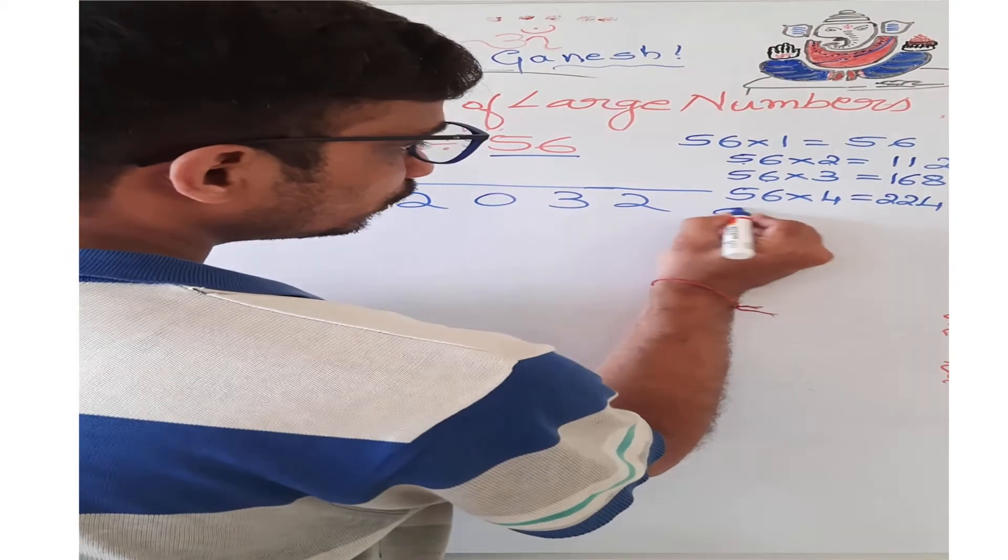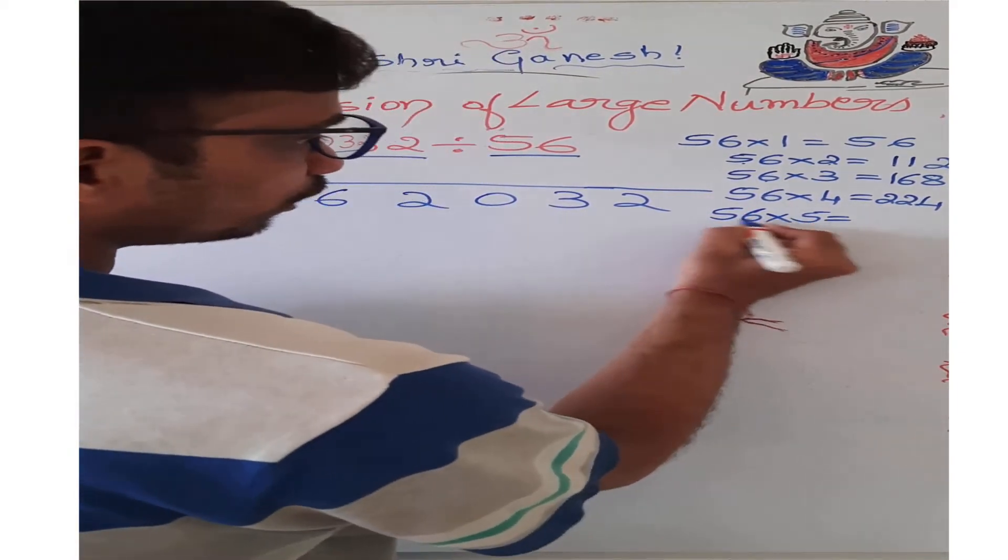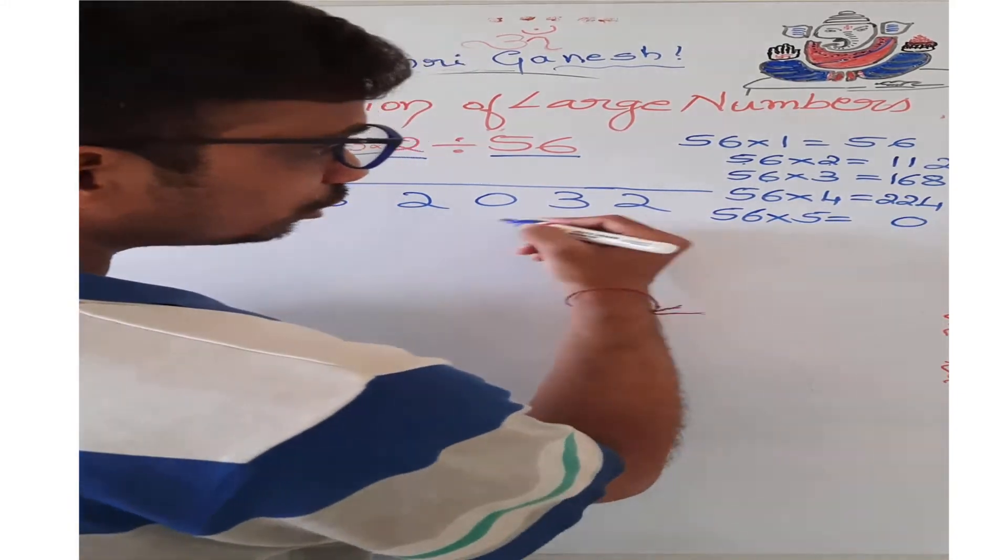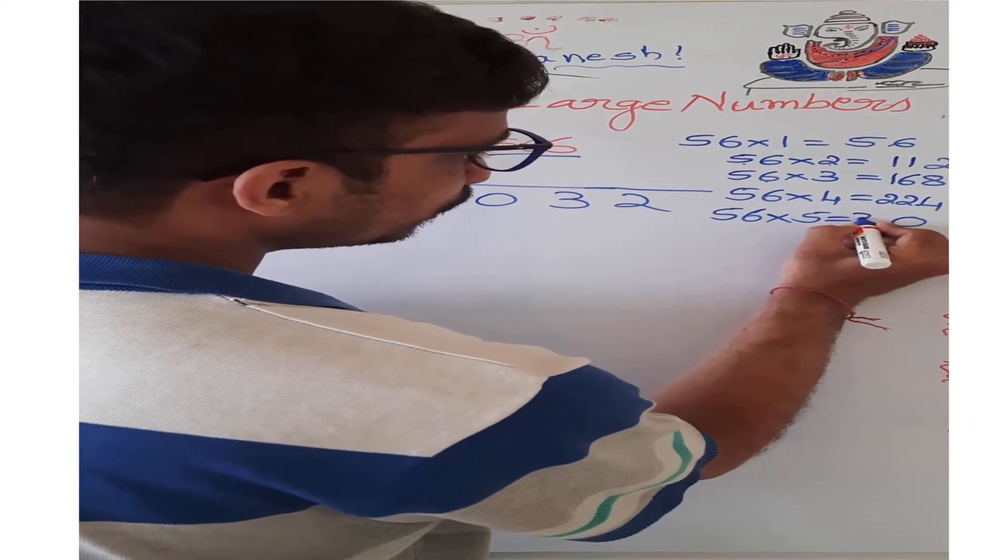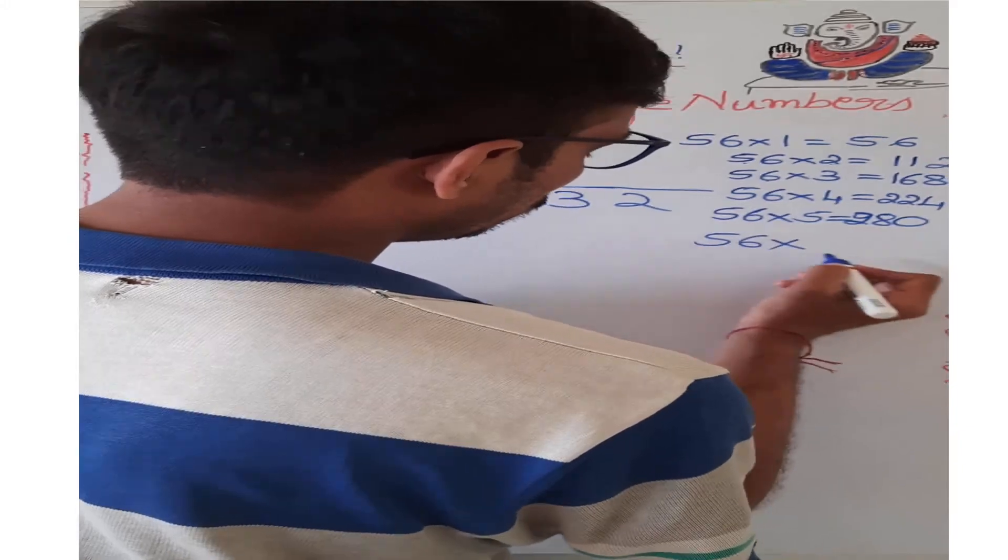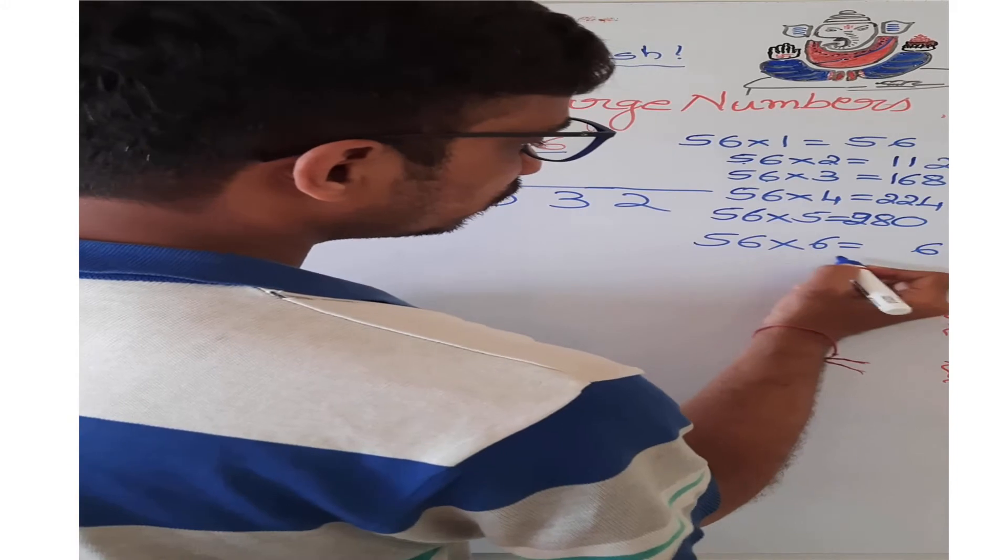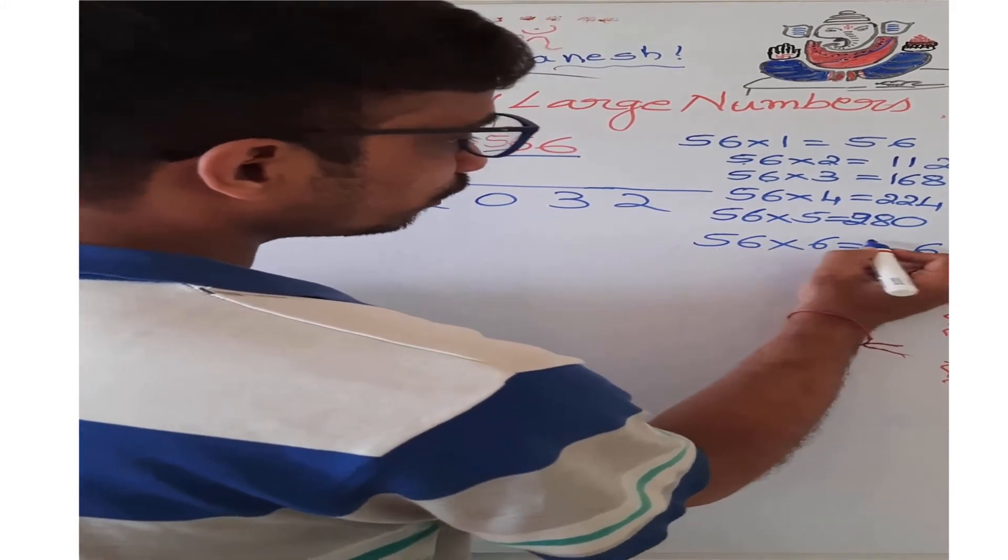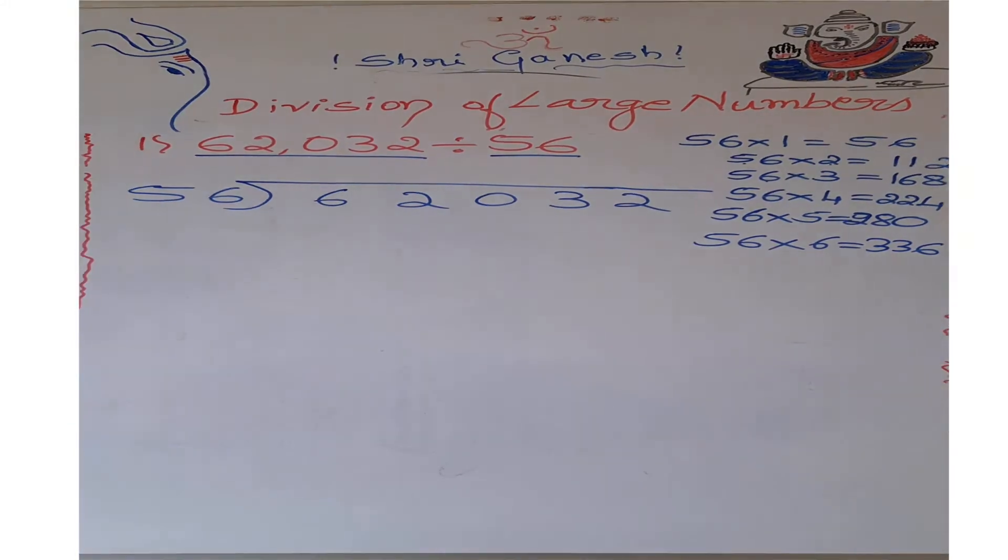Now 56 multiplied by 5: 5 into 6 is 30, 0, 3 carry. 5 into 5 is 25, 25 plus 3 is 28. We got it as 280. 56 into 6: 6 into 6 is 36, 6, 3 carry. 6 into 5 is 30, 30 plus 3 is 33. We got it as 336.